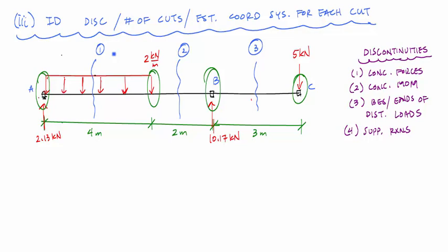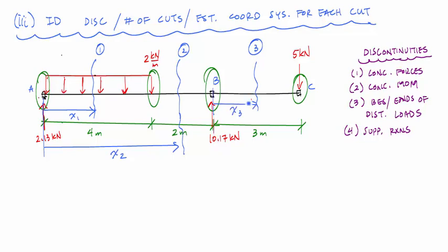For each cut I establish a coordinate system by choosing an origin and direction. A good choice for the origin is at a discontinuity. For cut one, the origin is at A going right, labeled x1. For cut two, I use the same origin at A going right, labeled x2. For cut three, the origin is at B going right, labeled x3. We'll keep everything left to right for this first example.